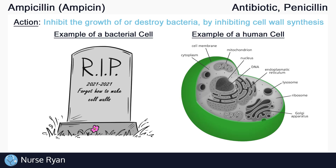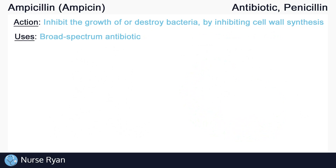This way, penicillins do not affect regular human cells like blood cells, muscle cells, etc., but only bacterial cells. Some bacteria are not susceptible to antibiotics like penicillin, or you can say they are resistant to penicillin — we'll talk more about that resistance in a bit. Ampicillin is a broad-spectrum antibiotic, which means that it can act on a wide variety of bacteria.